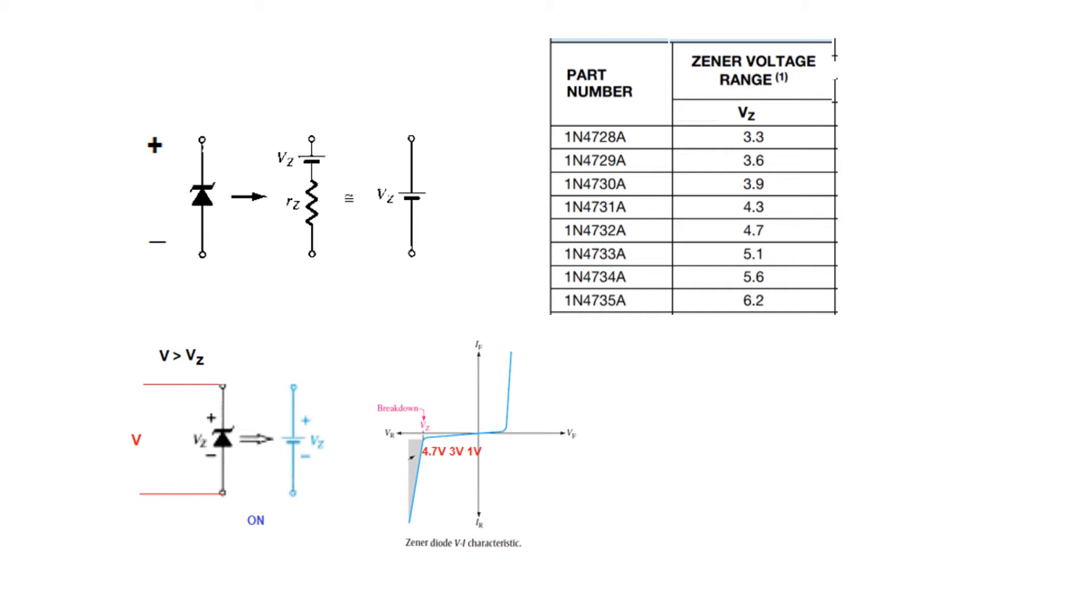Now a concept of Zener on and off I will explain here. Let's assume that this Zener is this one, 4.7 volt is the breakdown voltage here.